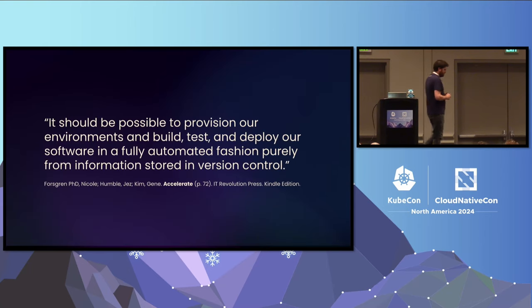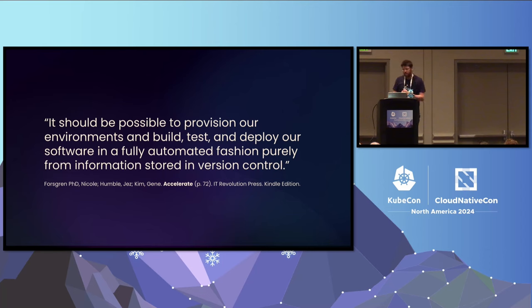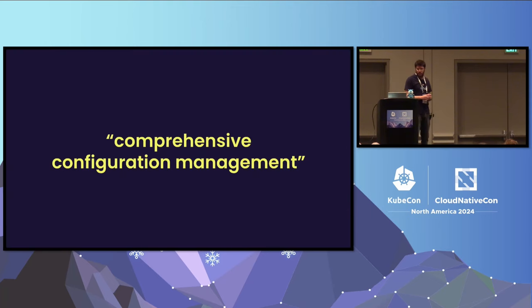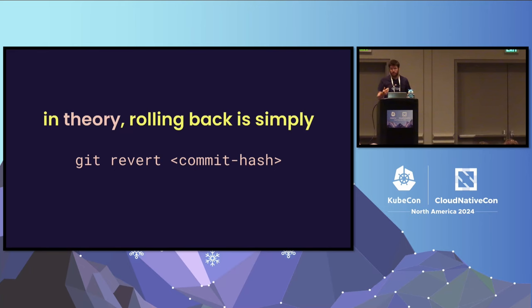To answer that, I want to look at an idea described in the book Accelerate by Nicole Forsgren, Jez Humble, and Gene Kim. They say it should be possible to provision our environments and build, test, and deploy our software in a fully automated fashion, purely from information stored in source control — they call this comprehensive configuration management. If we've achieved this, rolling back is simply a Git revert of the commit we want out.